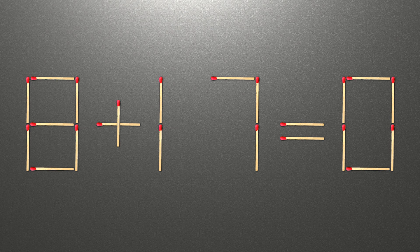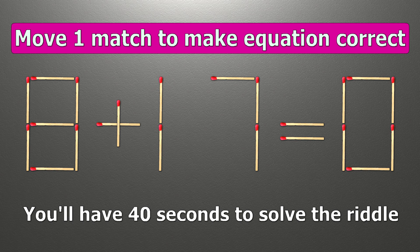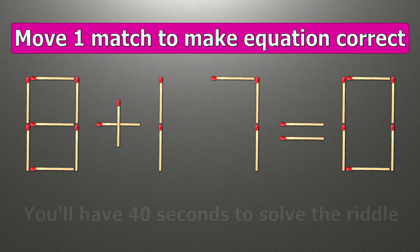Hello! We have the equality 8 plus 17 equals 0. Our equality is wrong.